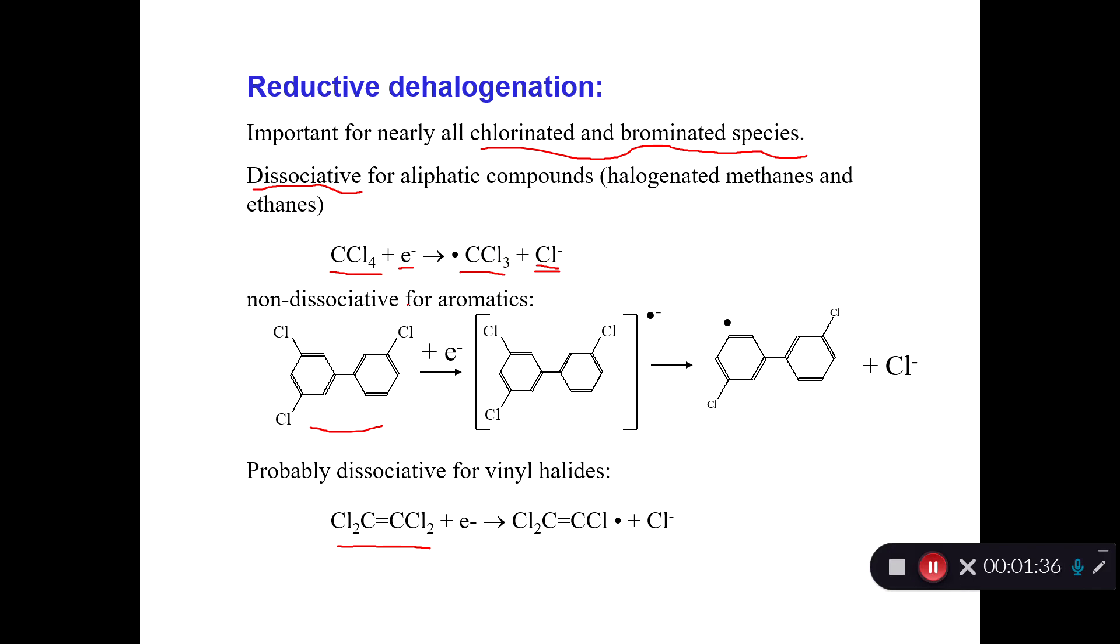It's dissociative because the instant that you transfer the electron, the carbon-chlorine bond gets broken. For aromatics, there's some evidence that you transfer the electron and then you form this thing, which is a radical, but it hasn't lost its chlorine yet. So it's a negatively charged radical. This exists for some tiny fraction of a second, and then you spit out the chloride and you end up with your radical as your product. This is what we would call non-dissociative because that carbon-chlorine bond doesn't break immediately upon transfer. In between are the vinyl carbons, and we think it's probably a dissociative mechanism for the vinyl halides.